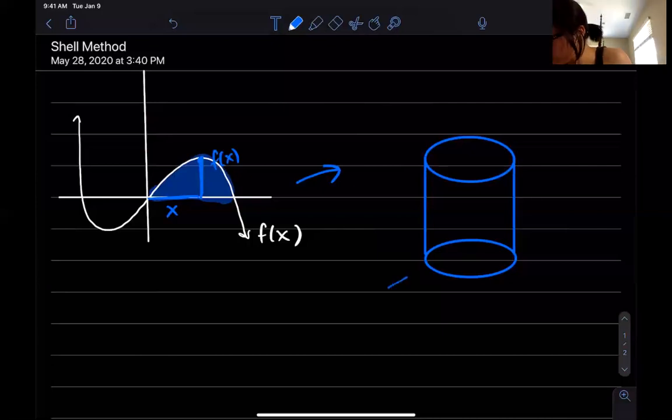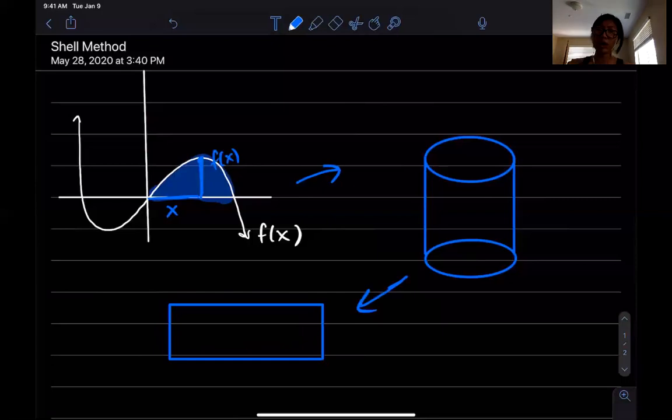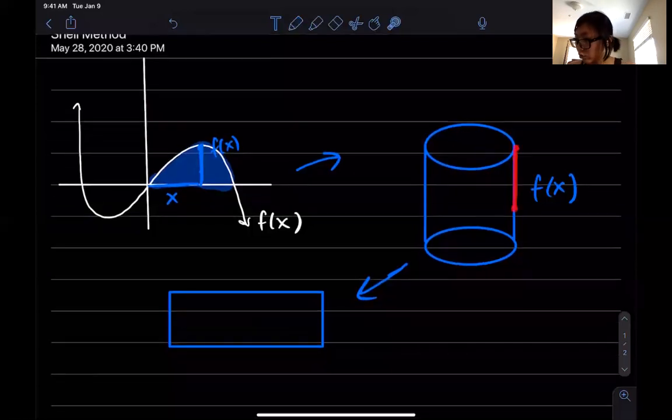What are the dimensions of the rectangle? From this cylinder, I can see that if I'm just moving this line all the way across, the height is gonna be f of x. That means on my rectangle, this side over here corresponds to this side over here, so this side is also gonna be f of x.